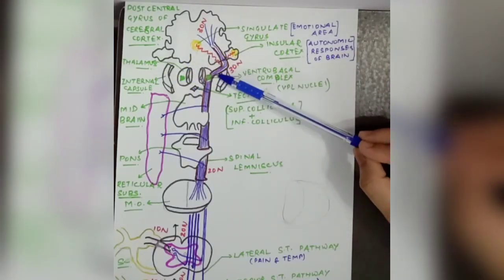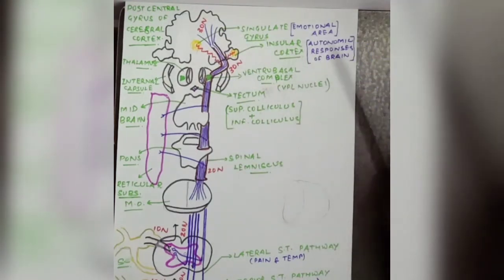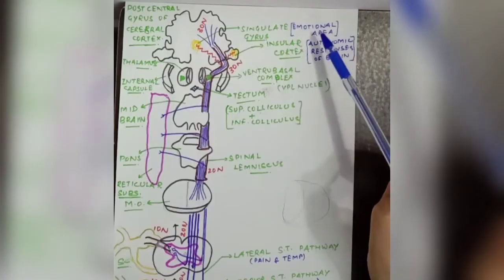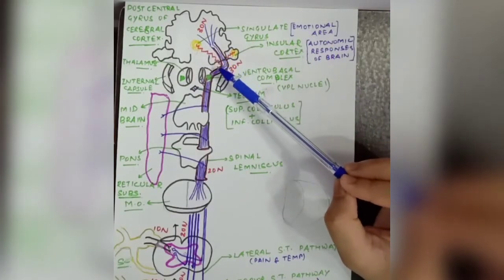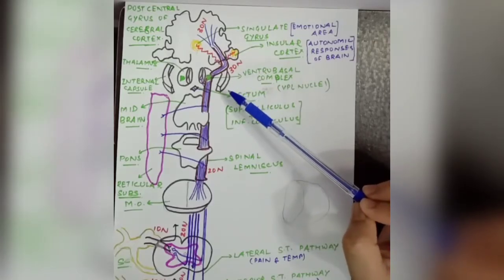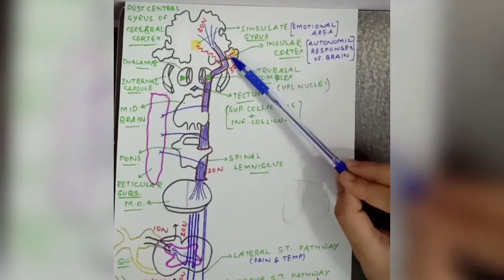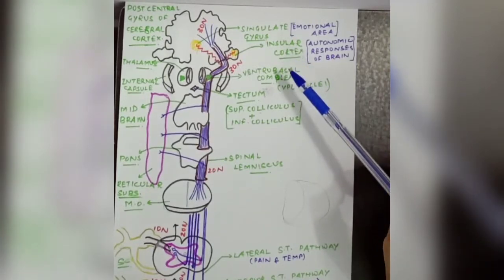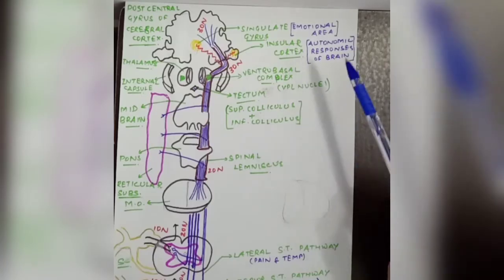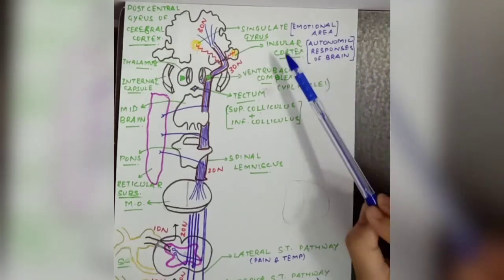The third order neuron passes through the posterior limb of the internal capsule and radiates into the cerebral cortex, where the analysis of pain, temperature, and crude touch takes place. There are two additional connections: one to the cingulate gyrus, which is an emotional area, explaining why emotions like crying are associated with pain. The second connection is to the insular cortex, which is responsible for autonomic responses during pain, such as tachycardia and sweating.